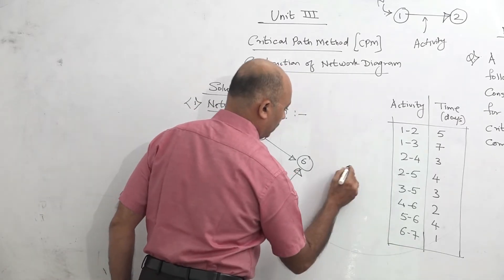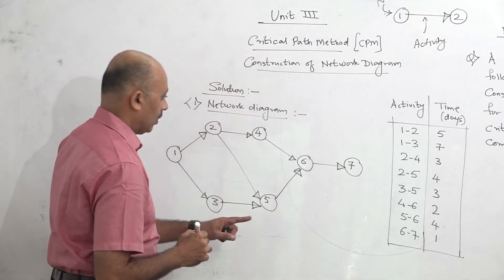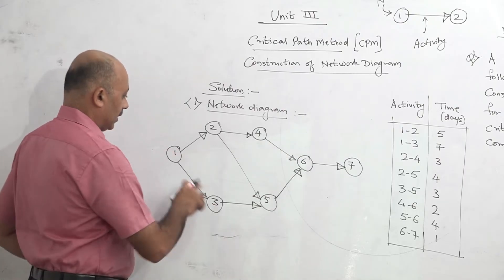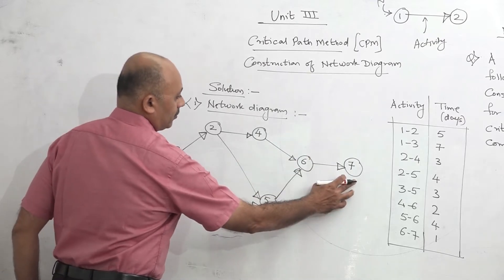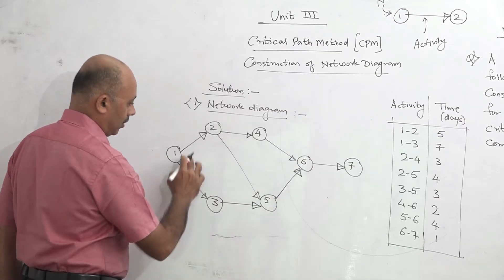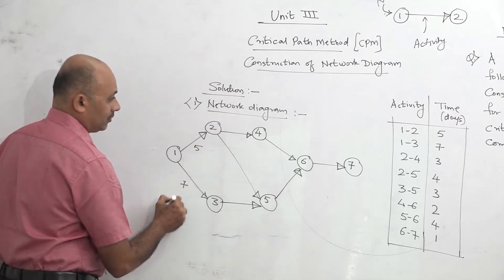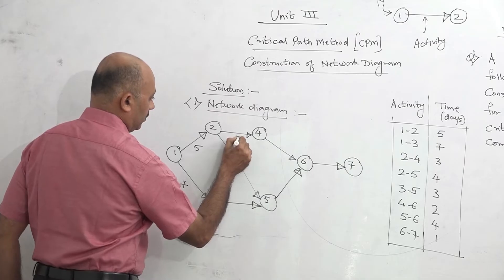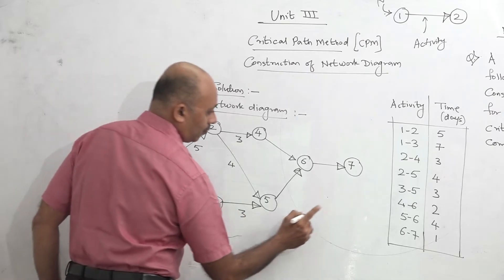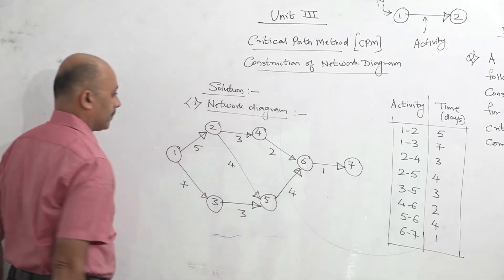The last activity is 6-7: we take event 7 and join — activity 6-7. Event number 1 is the start of the project, and event number 7 is the end of the project. The time is given; we will represent time under every arrow: 1-2 is 5 days, 1-3 is 7 days, 2-4 is 3 days, 2-5 is 4 days, 3-5 is 3 days, 4-6 is 2 days, 5-6 is 4 days, and 6-7 is 1 day. Our network diagram is now complete.